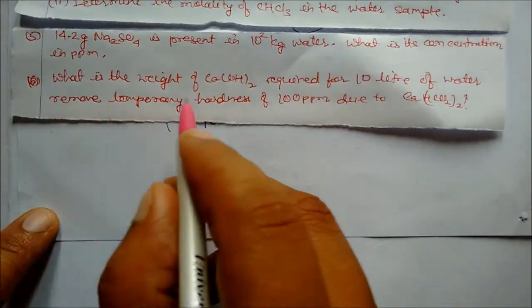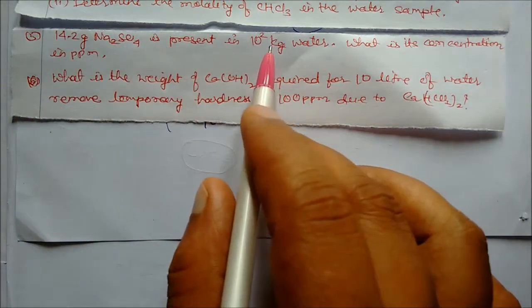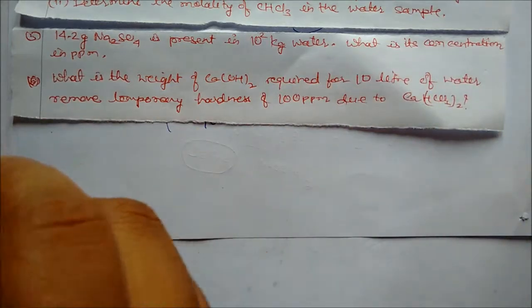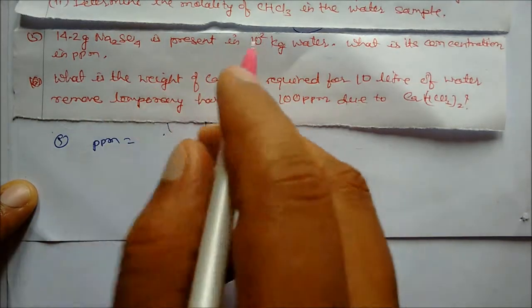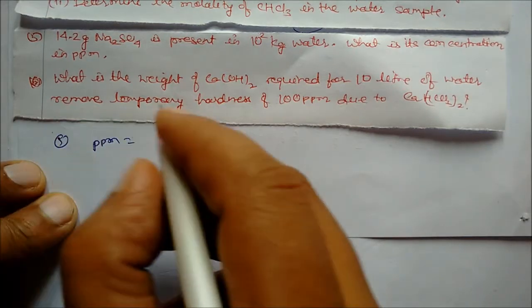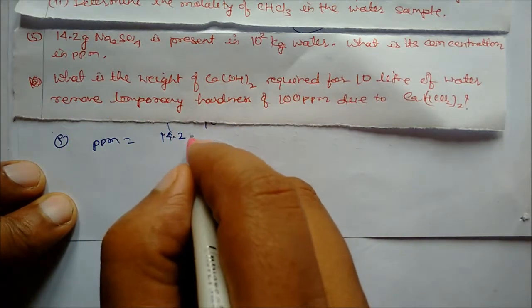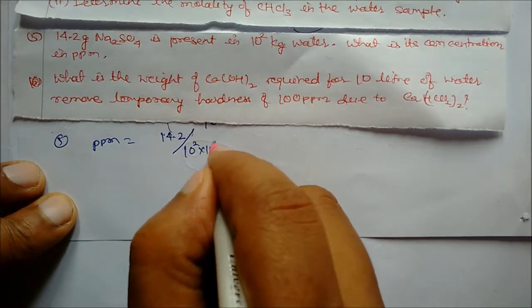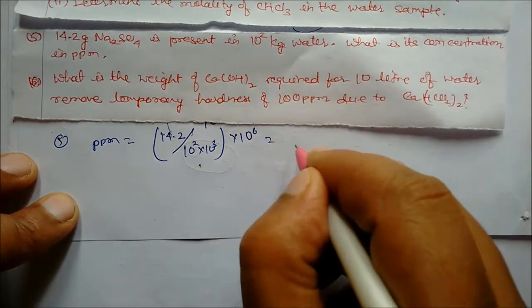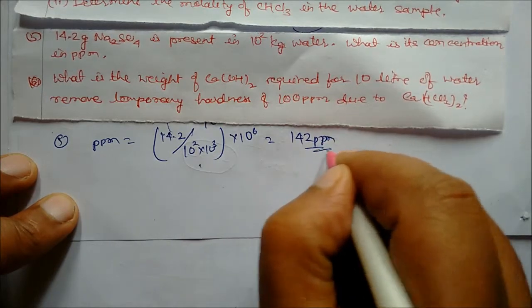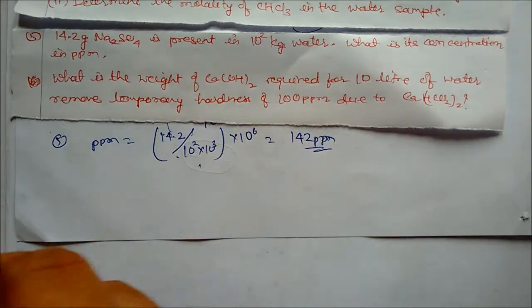Question five: 14.2 grams of sodium sulfate is present in 10² kilograms of water. What is the concentration in ppm? PPM = weight of solute / weight of solution × 10⁶. Weight is 14.2 grams; weight of water is 10² × 10³ grams. Solving: 14.2 / (10⁵) × 10⁶ = 142 ppm. The basic formula is: PPM = weight of substance / weight of solution × 10⁶.